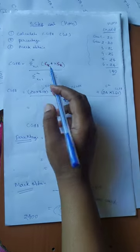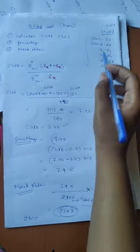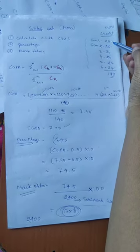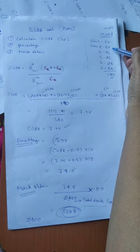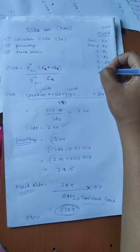CGPA is equal to total sum of credit point into semester point. Credit point is fixed. Honours credit point which is fixed, first semester 20, then up to 6th semester.